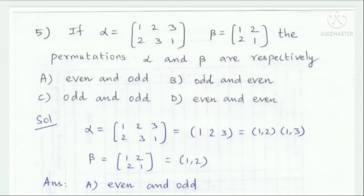One cycle is complete. Cycle length 2 means it is a transposition. For alpha: cycle length gives transpositions — (1,2) is one transposition, (1,3) is one transposition, giving two transpositions total. Therefore alpha is an even permutation.